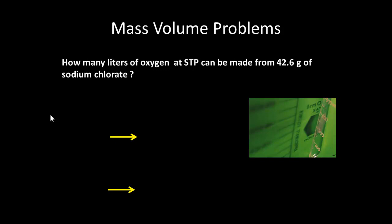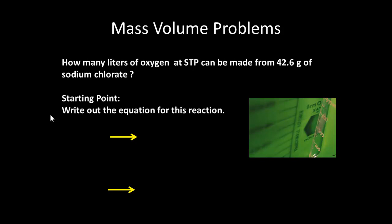Let's look at some mass-volume problems. How many liters of oxygen would we get at SDP from 42.6 grams of sodium chlorate? We need to know first of all what the equation is for the reaction so that we can determine something about the amounts. The equation is: 2NaClO₃ gives 2NaCl plus 3O₂.